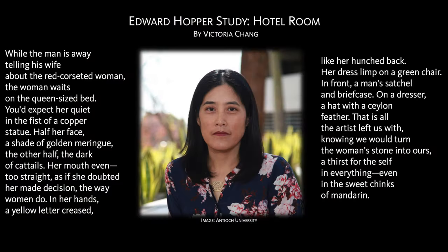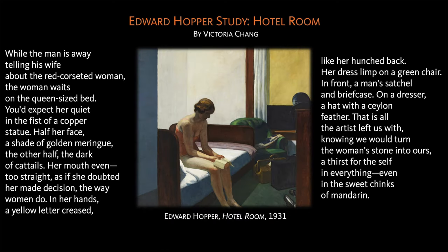Modern poets often base their ekphrasis on real works of art, works that you can see in life or look up on the internet. A good example is Victoria Chang's 'Edward Hopper Study Hotel Room.' The title alerts us to the fact that the poem attends to a work by the painter Edward Hopper. Many of the details in the poem, such as 'in her hands a yellow letter creased' and 'her dress limp on a green chair,' seem to match up with the painting. We know the poem is ekphrasis when we get to the passage: 'That is all the artist left us with.'